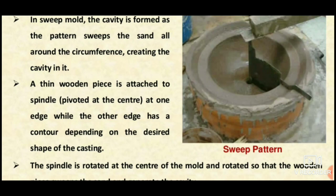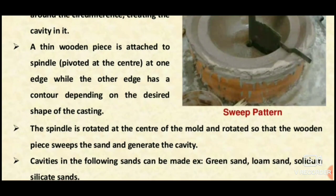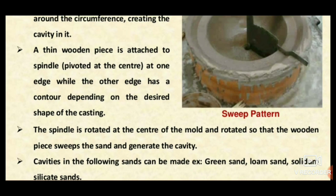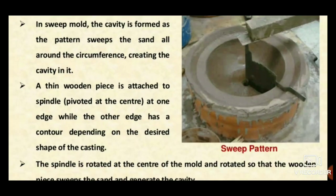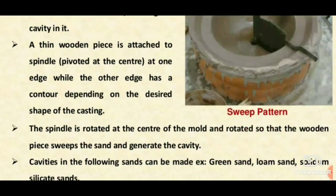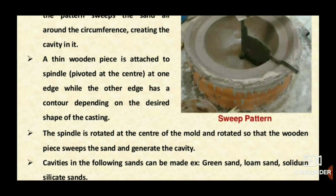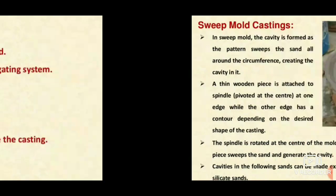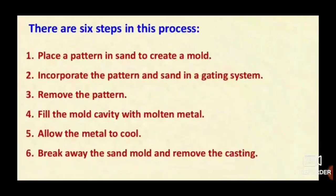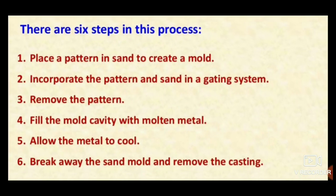The contour shape depends on the desired shape of the casting. The cavities can be made in various sands — for example, green sand, chrome sand, sodium silicate sands, etc.